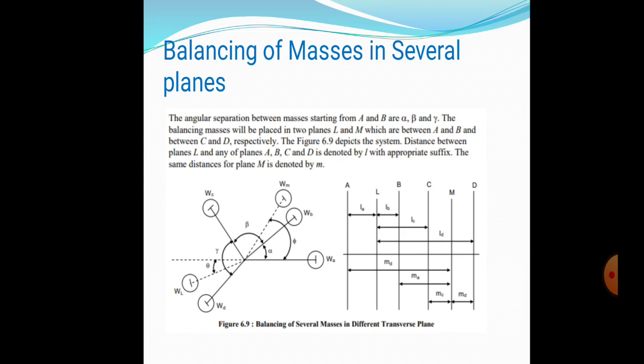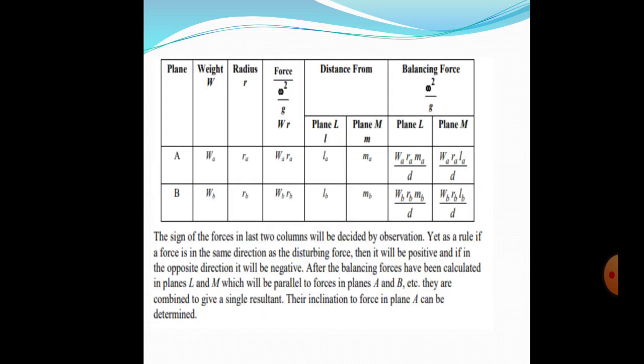You have to tabulate in the form: plane, weight W, radius r, force ω², distance l, and balancing force ω². This is all about dynamic balancing. It's quite simple - just put all values in tables and plot using either graphical method or formulation to get the unbalanced force. From the unbalanced force, we can see if it is partially balanced or balanced.